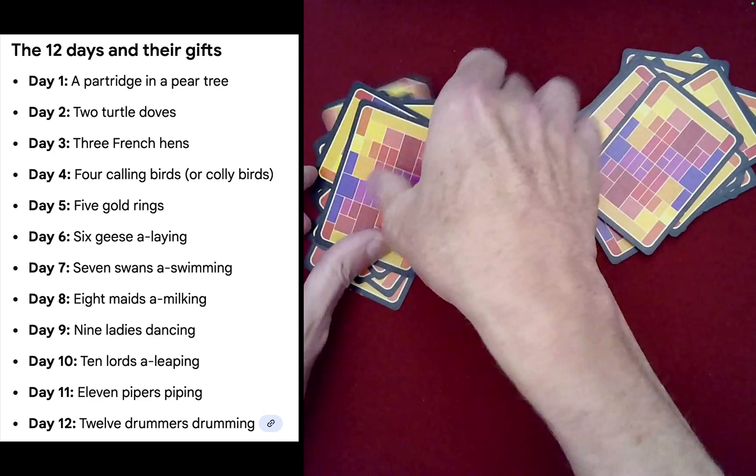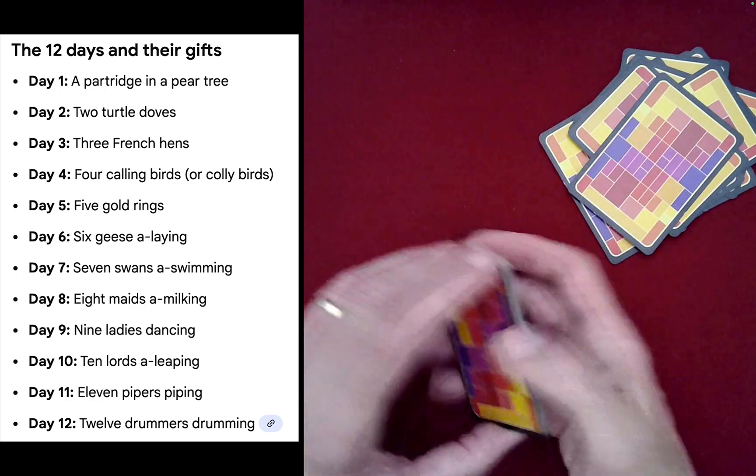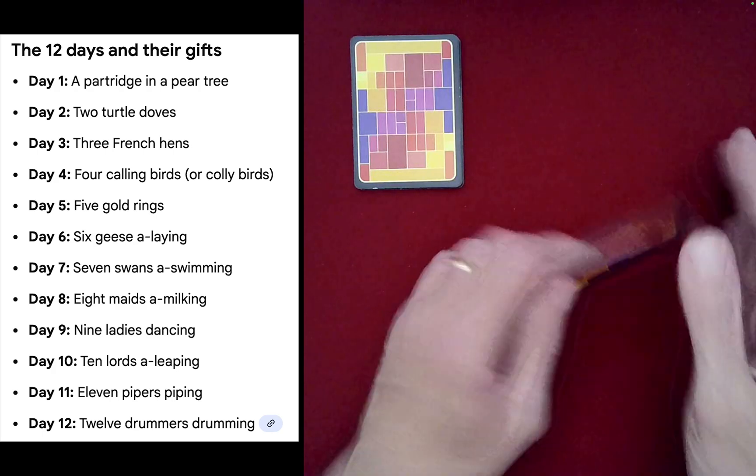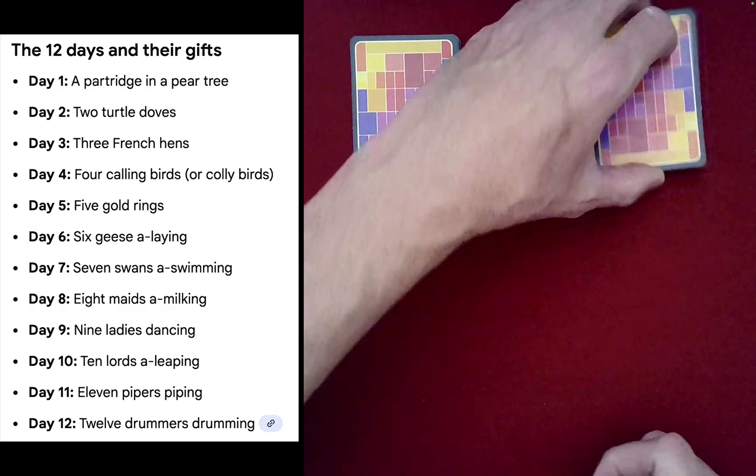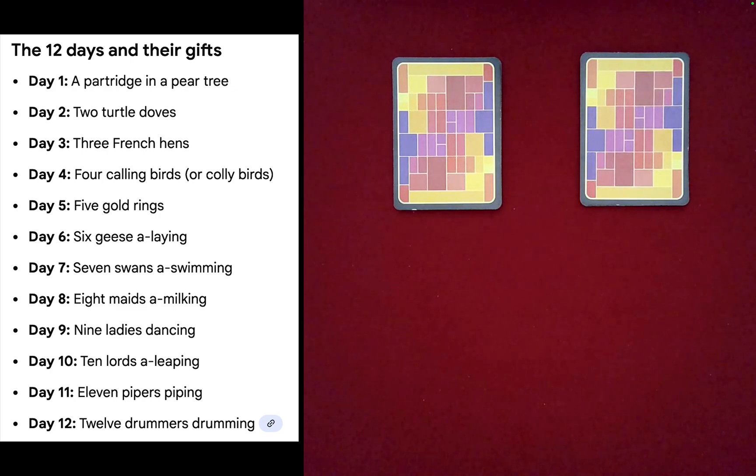You can have spectators do this, just kind of spin, bring together. And then what we're going to do is we're going to take a look at their cards. Now what I'm hoping will happen here, if we've made a good series of choices throughout this, even though they are random choices, I'm really hoping that both of you have received all 12 gifts for the 12 Days of Christmas.